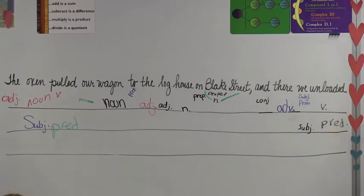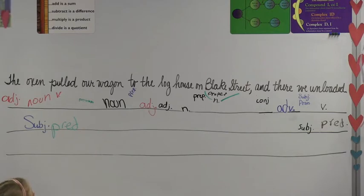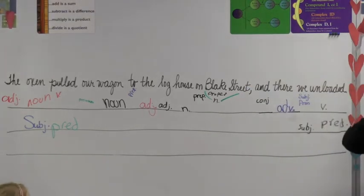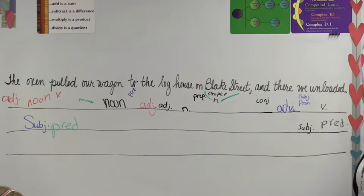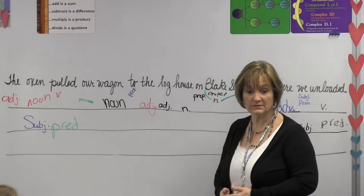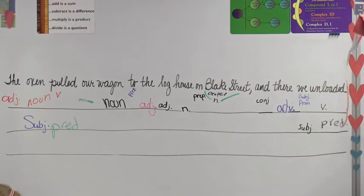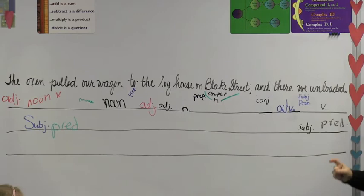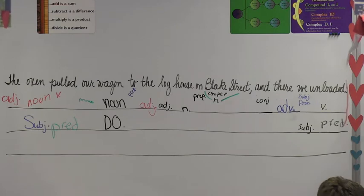And when we have an action verb, watch out table. What are we going to look for next? Direct object. Direct object, yep. Direct object. What question are we going to ask ourselves to know if there's a direct object or not? Oxen pulled what? The oxen pulled the wagon. Oh, there you go. There's your direct object. So would you come up and identify wagon as our direct object? D-O. All right. Just put a D-O. Now, once we find a direct object, what do we always look for? An indirect object. And if we have one, it's going to be in front of the direct object. Important parts of the sentence are identified.